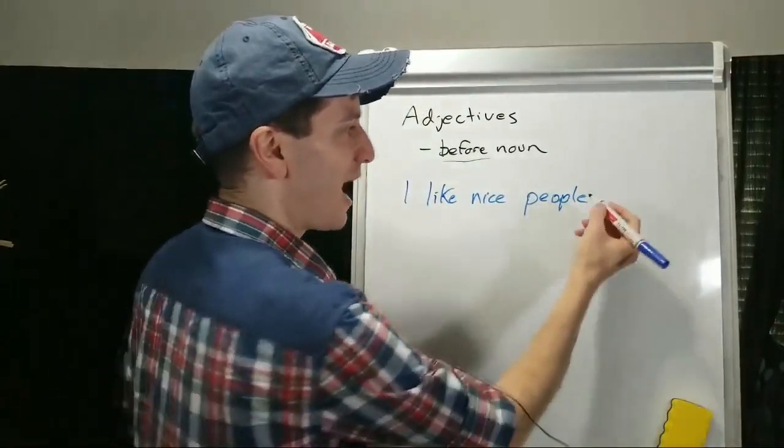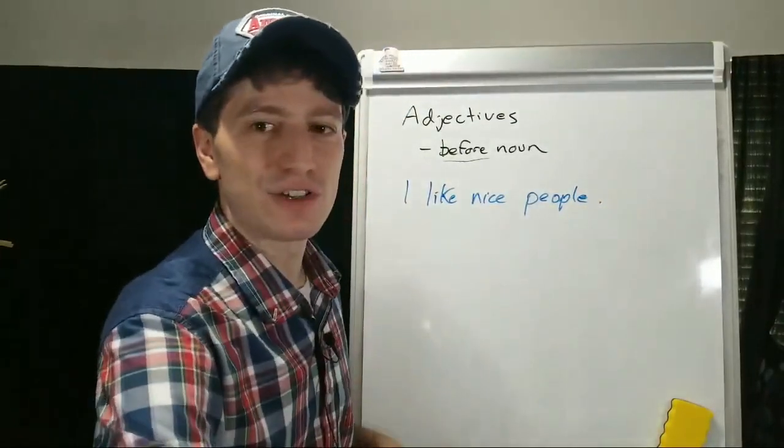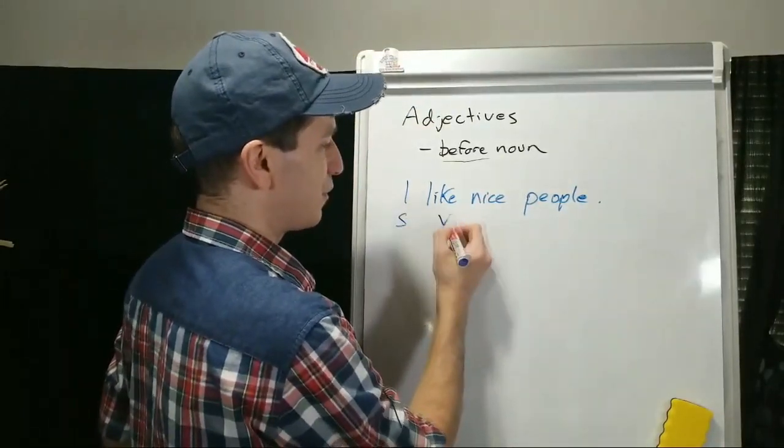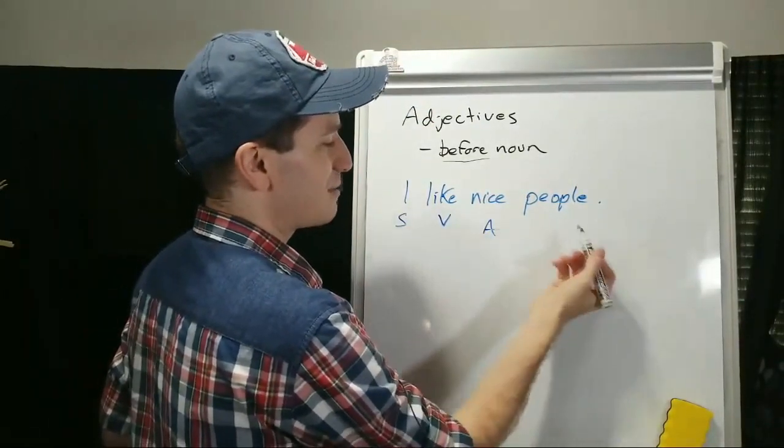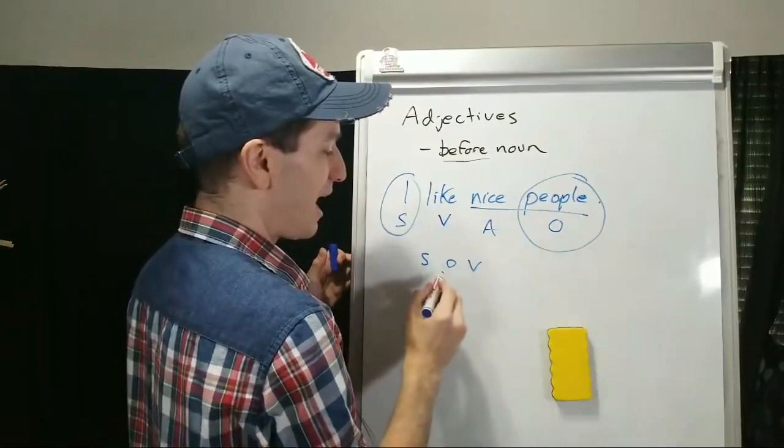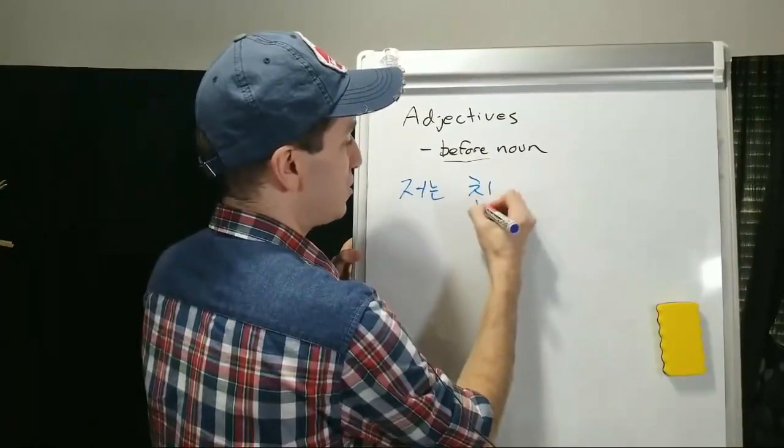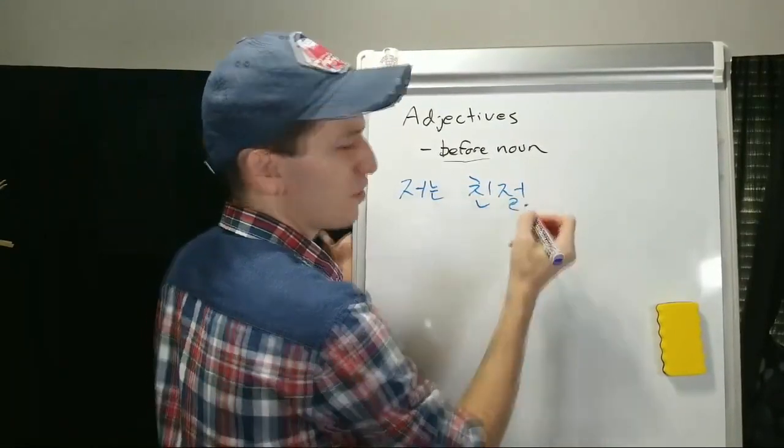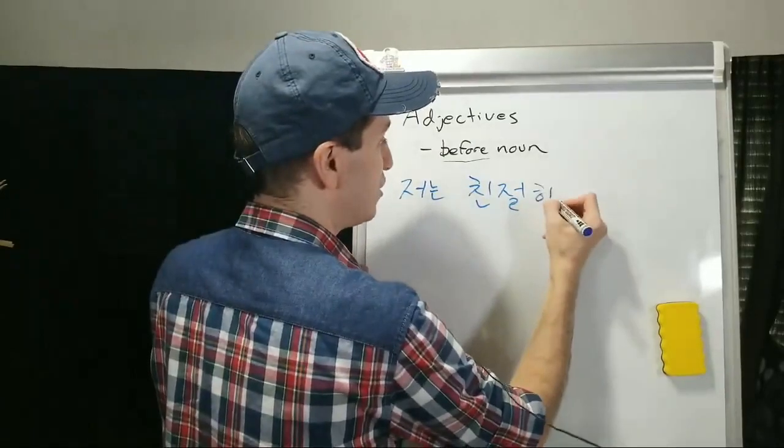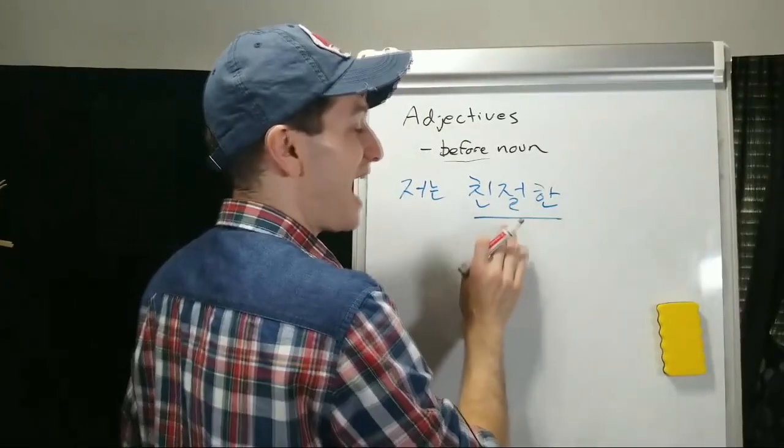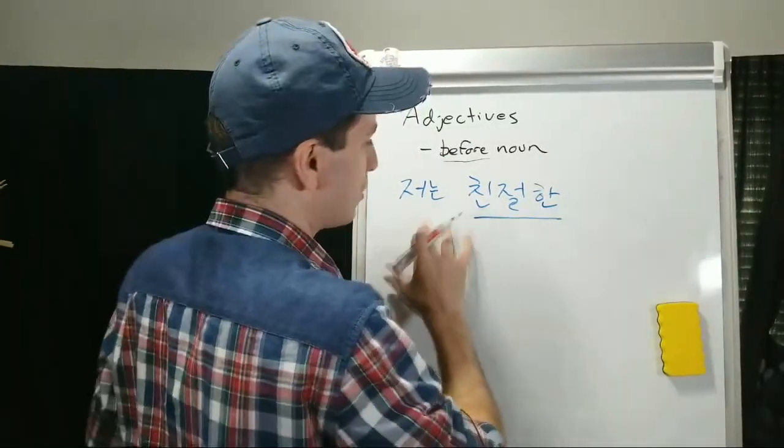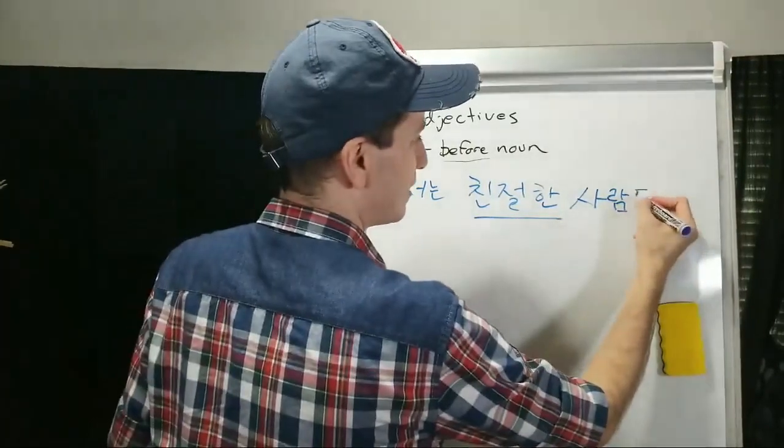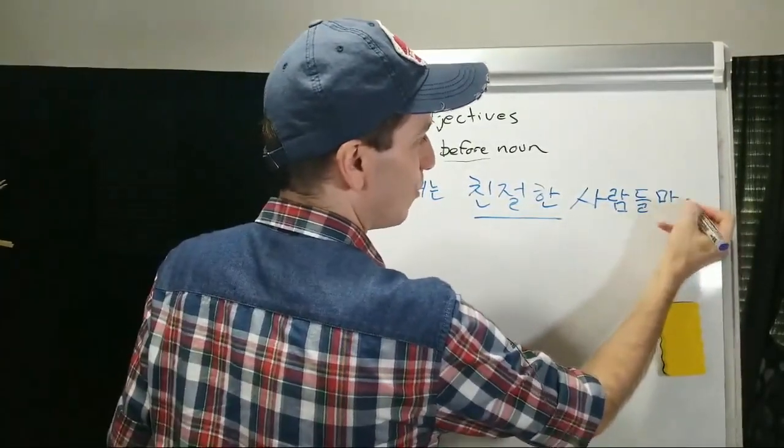So I like nice people. How would we organize this sentence in Korean? This would be I is the subject, like is the verb, nice is an adjective, and people is object. So I, nice people, like. 친절하다 is the word for one of the ways to say to be nice. There's a few. 친절한 now is an adjective. It has to come before a noun. So 저는 친절한 사람들, people, or 사람들만, only 좋아해요. I like only nice people.